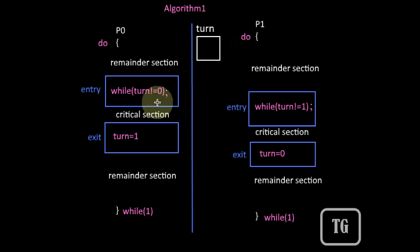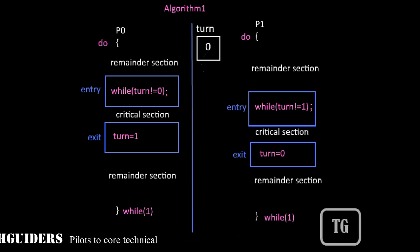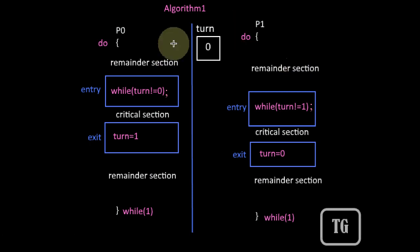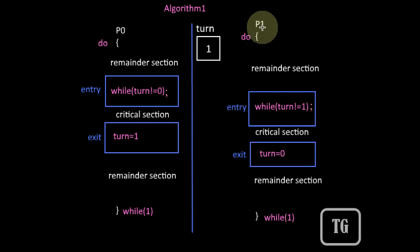Both processes share a single global variable called 'turn', and the turn can have only two values: either 0 or 1. If the value is 0, one of the two processes can enter the critical section, and if the value is 1, the other process can enter. Specifically, if the value is 1 it is process 1's turn and P1 can enter the critical section, and if the value is 0 it is process 0's turn and P0 can enter the critical section.